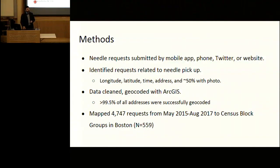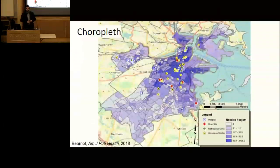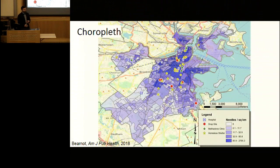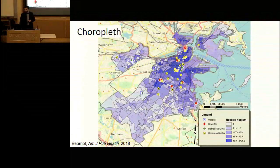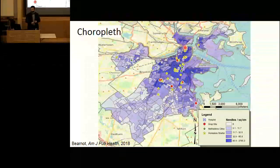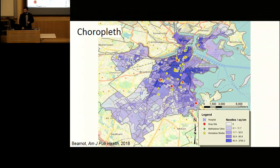We performed three analyses. The first is a choropleth map — essentially a heat map — where the number of needles in each census block group was divided by area to give needle density. Higher density equals darker purple. The South End/Roxbury neighborhood shows the highest density, with additional concentration in South Boston, the Financial District, North End, and Charlestown. Importantly, these are only reported needles, not all needles found, so there's inherent sampling bias. This is a purely descriptive method.